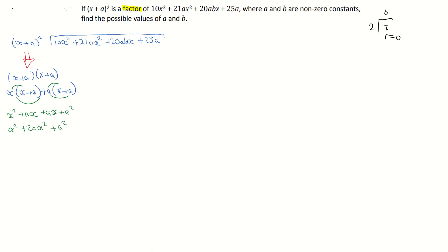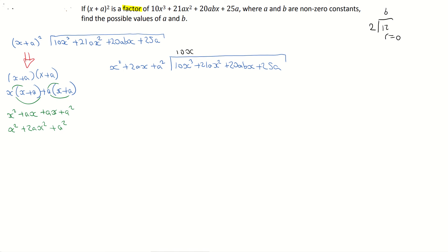Now I'm going to divide that in. So I'm dividing x squared plus 2ax plus a squared into 10x cubed plus 21ax squared plus 20abx plus 25a using long division. x squared divides into 10x cubed 10x times. So that's my first step, and I'm now going to multiply that back down. 10x multiplied by x squared is 10x cubed, and 10x multiplied by 2ax is positive 20ax squared, and 10x multiplied by a squared is plus 10a squared x.